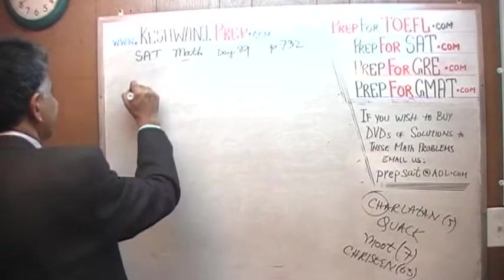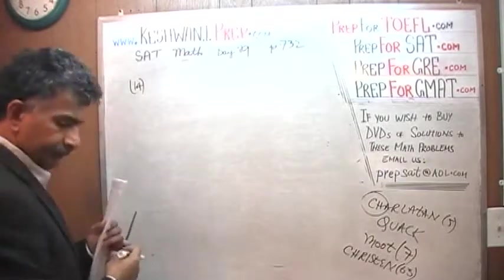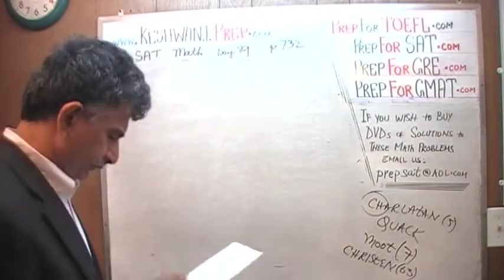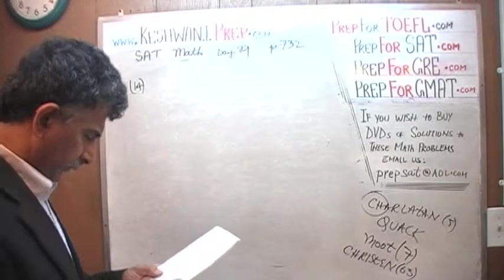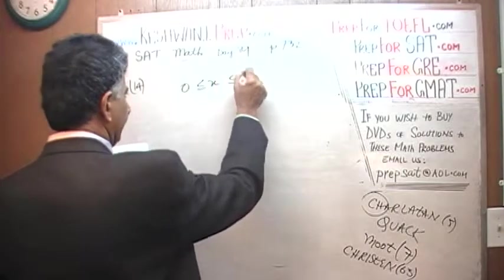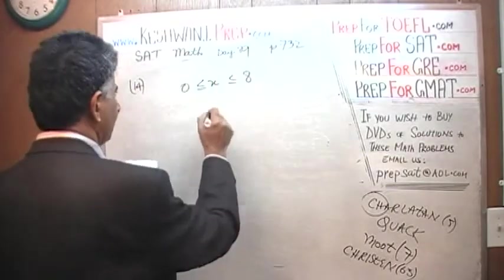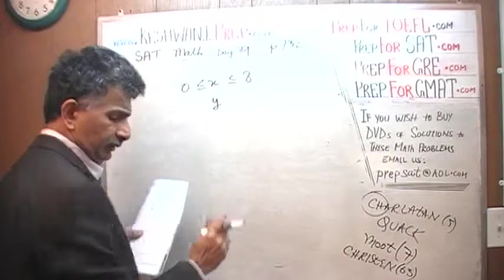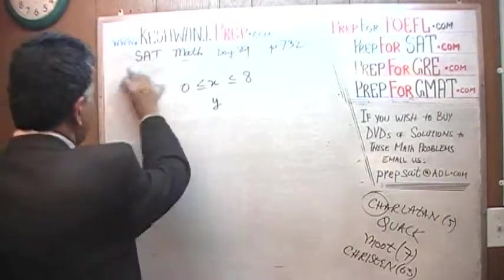Number 14. We are told that X is between 0 and 8, and we are also told that Y is between, let's put them next to each other, it will be easier to analyze it.